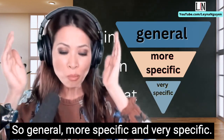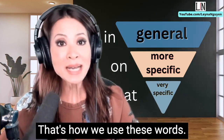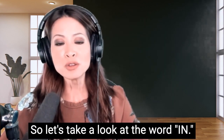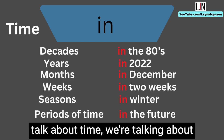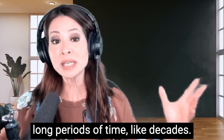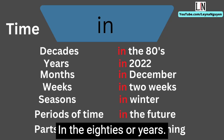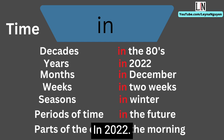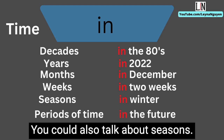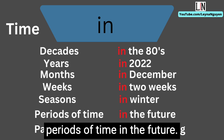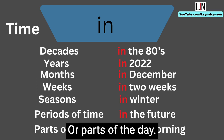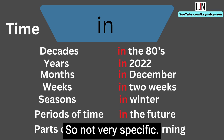Let's take a look at the word in. When we're using in to talk about time, we're talking about long periods of time — like decades: in the 80s; years: in 2022; months: in December; weeks: in two weeks. You could also talk about seasons — in winter or in the winter — and periods of time in the future, or parts of the day: in the morning.